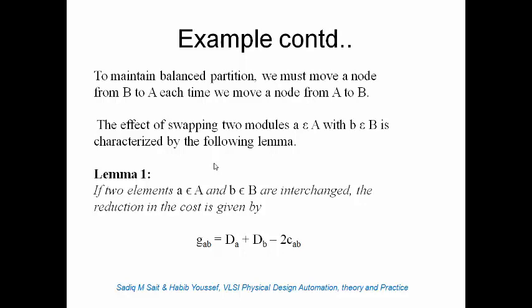This is the first lemma proposed by Kernighan and Lin: if two elements — A belonging to partition A and B belonging to partition B — are interchanged, the reduction in the cut set (the gain) is given by DA + DB - 2*CAB, where CAB is 1 if there is an edge between A and B, and 0 otherwise. Here we assume all edges have the same cost, though in practice a higher weight can be assigned to critical nets.